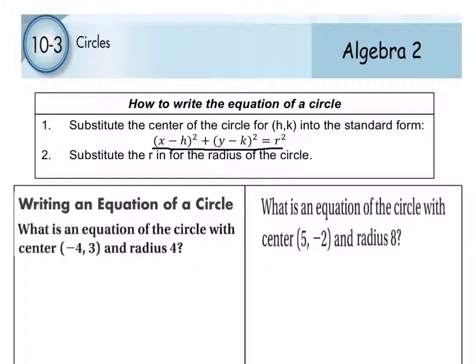First thing on how we're going to write the equation is we're going to substitute the center in for h and k. We're going to put our h and k in and then we've got to figure out the radius and we're going to put that in as well. The thing about the radius is we're going to have to eventually square it to fill in the equation.